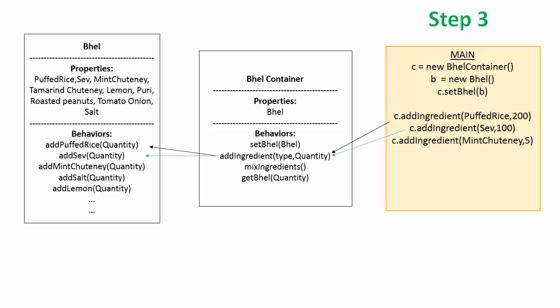Then we keep on adding ingredients to bhel via add ingredient mechanism provided by bhel container. Once we know that a container will essentially have this behavior, then actual container, even if replaced, doesn't affect main procedure. Since the detailing of how exactly the methods will work is encapsulated inside that particular entity.